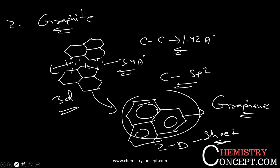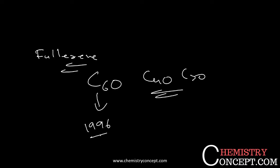Moving to fullerene, which was discovered in 1996. There are many fullerenes including C60, C40, and C20. C60 was discovered in 1996 by Smalley and Robert Curl, who won the Nobel Prize. C70 is also known, and C60 is known as buckminsterfullerene, with a structure resembling a football with hexagons and pentagons.